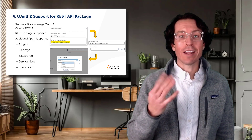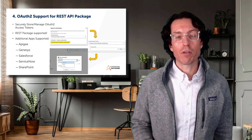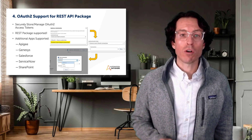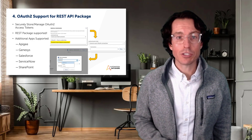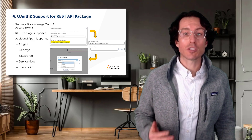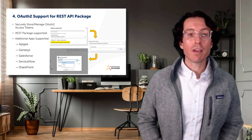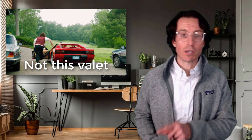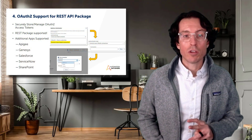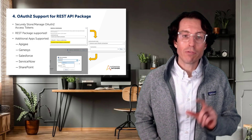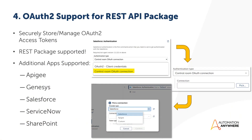Coming in at number four is OAuth2 support for the REST API package. OAuth2, or Open Authorization 2.0, is a standard protocol that enables third-party applications to access users' data without necessarily exposing their credentials. Think of OAuth2 like a valet key for your digital accounts — instead of sharing your main keys like your username and password, you provide a limited-use key to perform specific tasks. With OAuth2, you're ensuring that your automation processes are not only efficient but also follow best practices for user authentication and data protection.